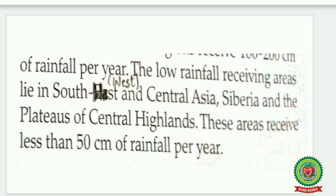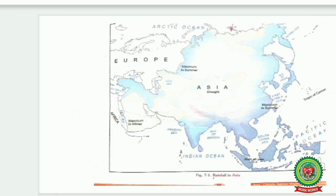The low rainfall receiving areas lie in Southwest and Central Asia, Siberia, and the plateaus of the Central Highlands. These areas receive less than 50 centimeters of rainfall per year.